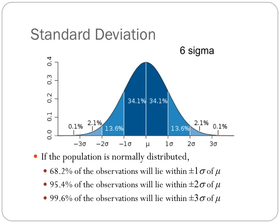Some of you may have heard of the Six Sigma management processes. The name is derived from the concept we are discussing here. Integrating the Gaussian distribution from six standard deviations below the mean to six standard deviations above the mean accounts for 99.99966% of the total observations possible within the population. The Six Sigma management process arises from the desire to have only 0.00034% defective materials and products.